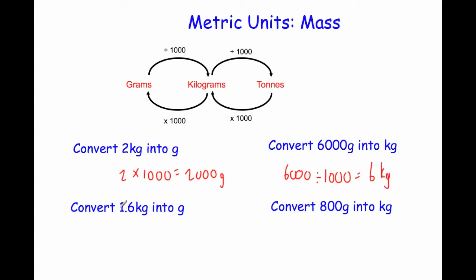Next, convert 1.6 kilograms into grams. Again we multiply by 1,000. So 1.6 times 1,000 — moving the digits three places to the left — gives us 1,600 grams.